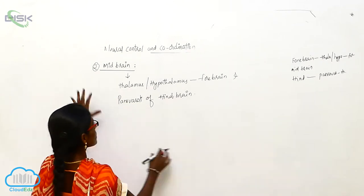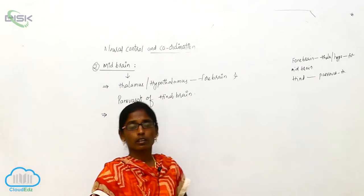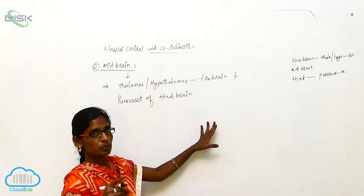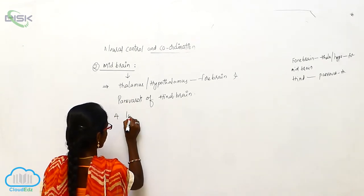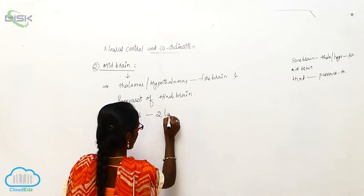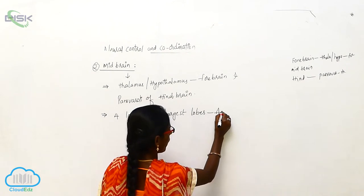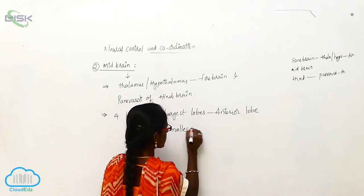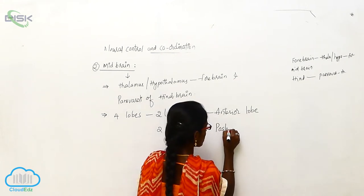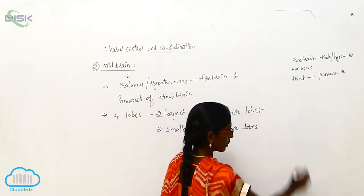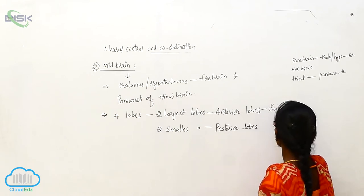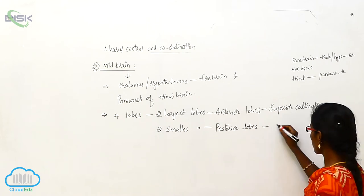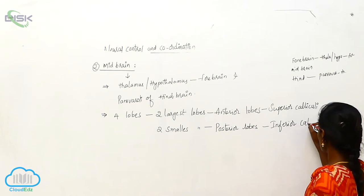The midbrain consists of four lobes. Two largest lobes are called anterior lobes, also known as superior colliculi, and two smallest lobes are called posterior lobes, also known as inferior colliculi.